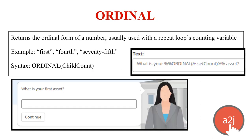ORDINAL returns the ordinal form of a number, usually used with a repeat loop's counting variable — for example, 'What is your first asset?' or 'What is the name of your fifth child?' The syntax is ORDINAL, parentheses, the variable name, close parentheses. Note that brackets are only needed around the variable name if it contains a space.